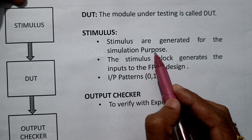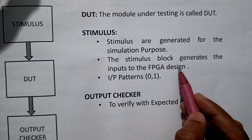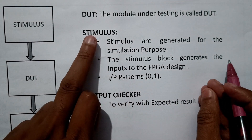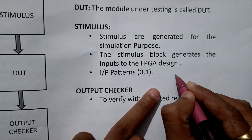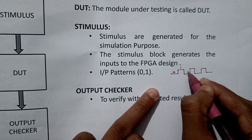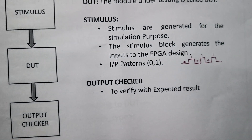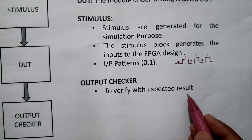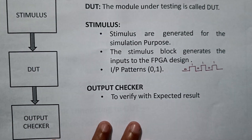Now let us talk about Stimulus. Stimulus is basically generated for simulation purposes. The stimulus block generates the inputs required for the FPGA design. In terms of patterns, the simple inputs we inject in the form of 0 and 1 are called stimulus — they can be in the form of 0 and 1, or in the form of a clock pulse. This stimulus generation assigns input values with certain durations. The third element is the Output Checker, whose functionality is to verify the result with the expected result. If we get a positive result the code is accepted; otherwise, errors are generated.